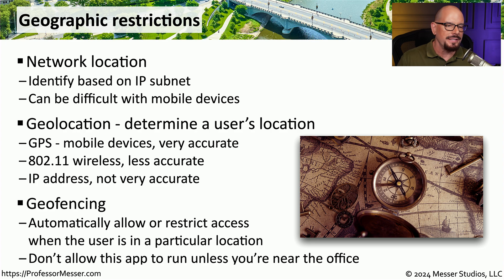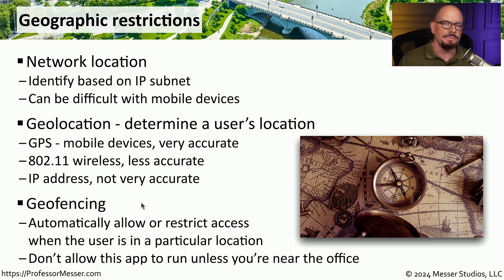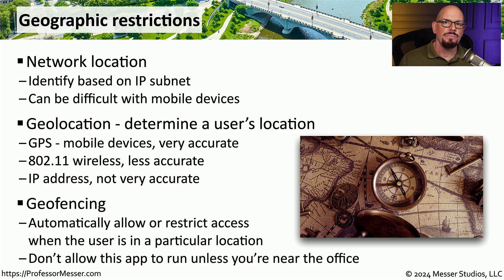Once we know a user's location, we can assign rights and permissions accordingly. We refer to this as geofencing. Geofencing takes into account where a user might be and allows or disallows access to information based on physical location. For example, certain sensitive data within the organization may only be viewable if you are physically located in the corporate headquarters building. If you're outside of the building, you may not have access to that data.